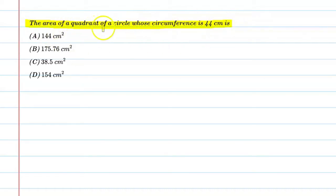Okay, so you have to find the area of a quadrant whose circumference is 44 cm. Let's start. Given is the circumference of a circle.